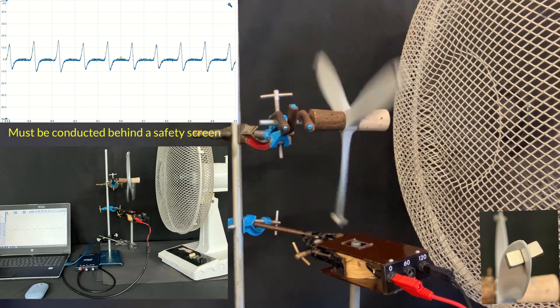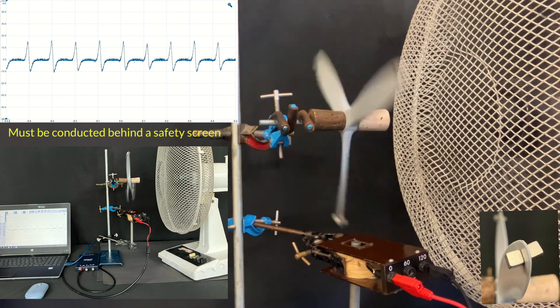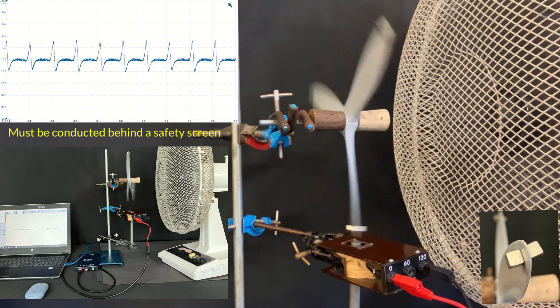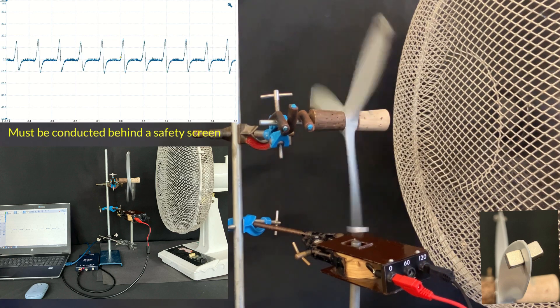I recommend gluing the magnets onto the turbine blades to reduce the risk of them flying off, but it should still be done behind a safety screen.